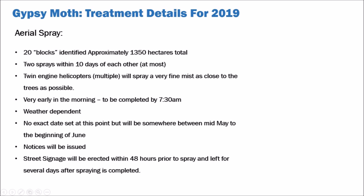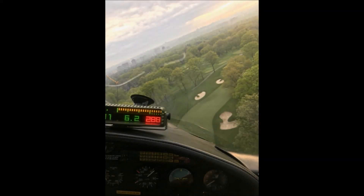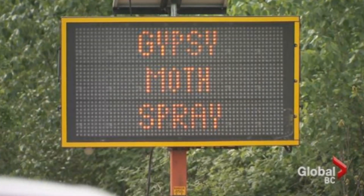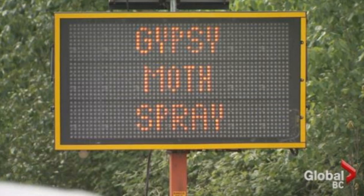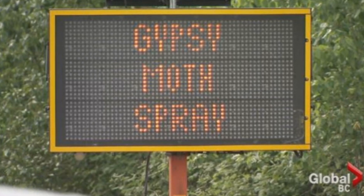Spraying will commence very early in the morning and will be completed by 7:30am on each day it is applied. Weather conditions are very important for success — minimal wind and no rain are critical. Weather also affects caterpillar and leaf development, which are both critical for timing of application as well. Because of this we have no exact date set in advance but will be somewhere between mid-May and early June. Pamphlets and letters will be issued to residents within and near the boundaries of the spray blocks. Street signage will be erected within at least 48 hours of the spray and left for several days after spray completion.